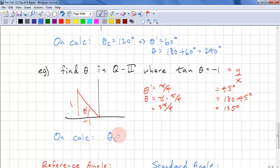On our calculator, theta c equals negative 45 degrees. So that implies that theta prime is 45 degrees. Equals 180 minus 45. And that's 135 degrees again.